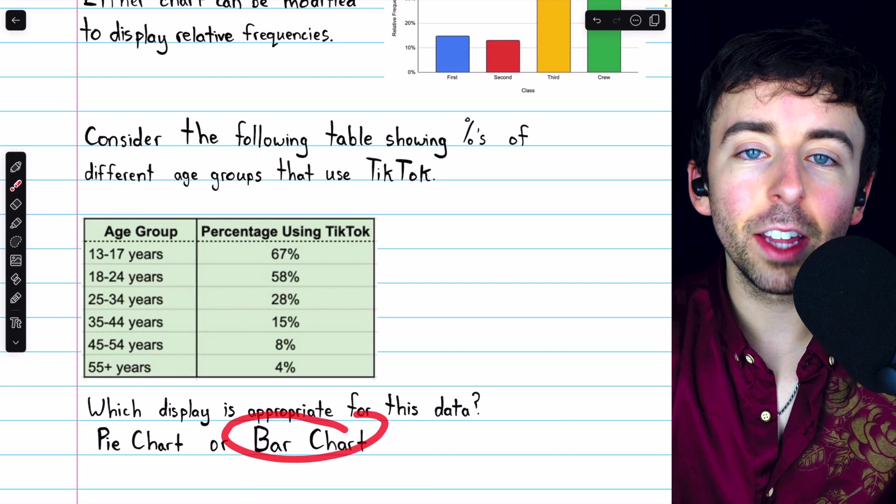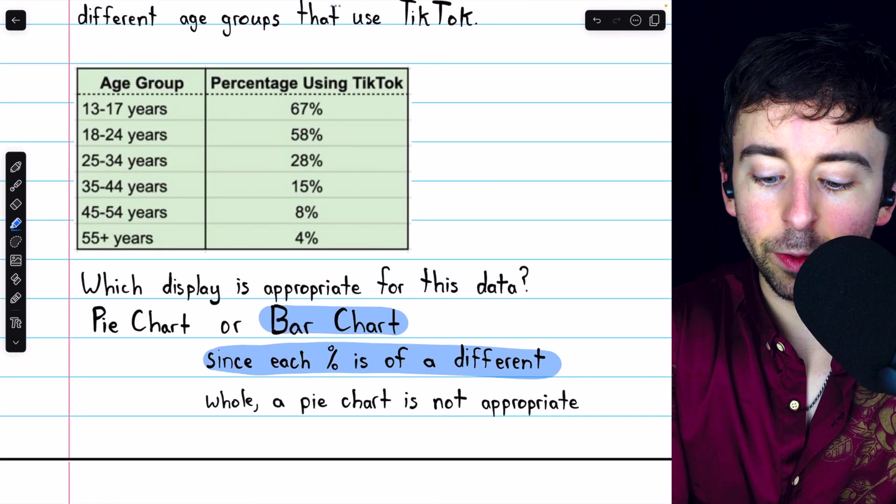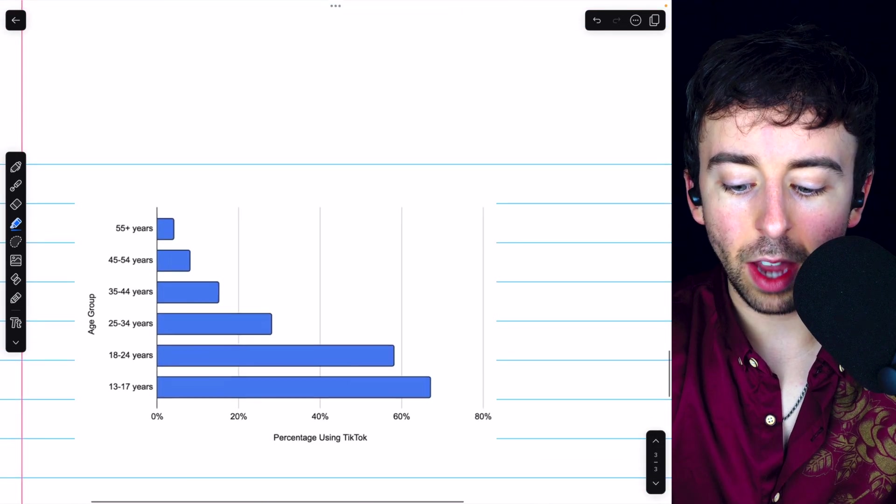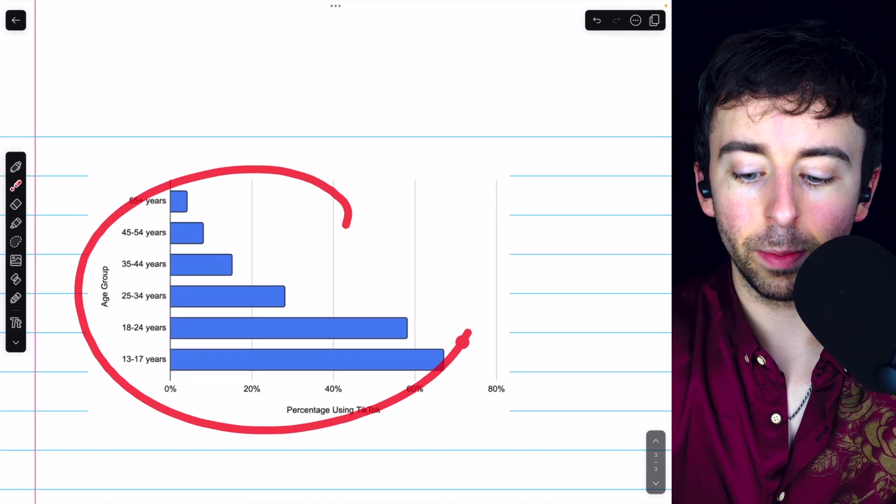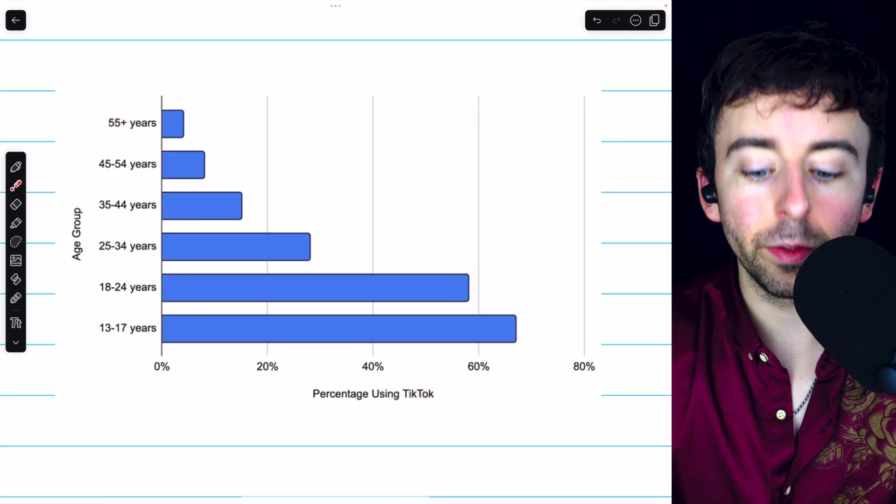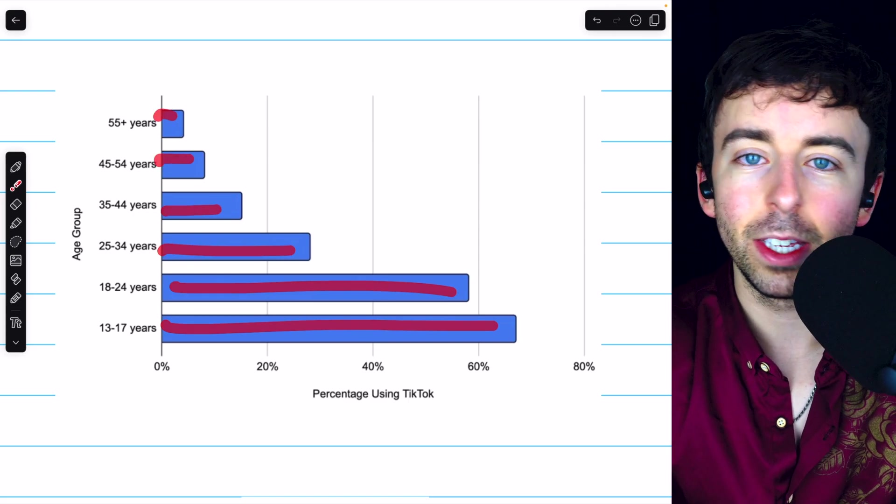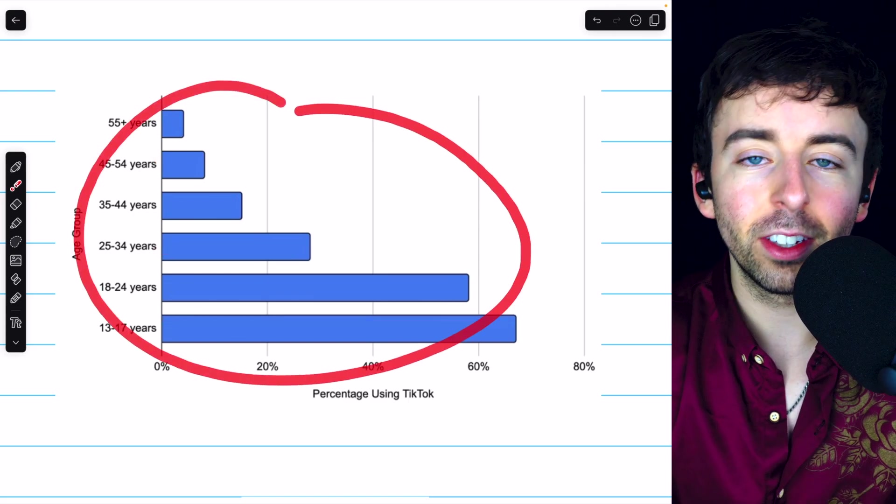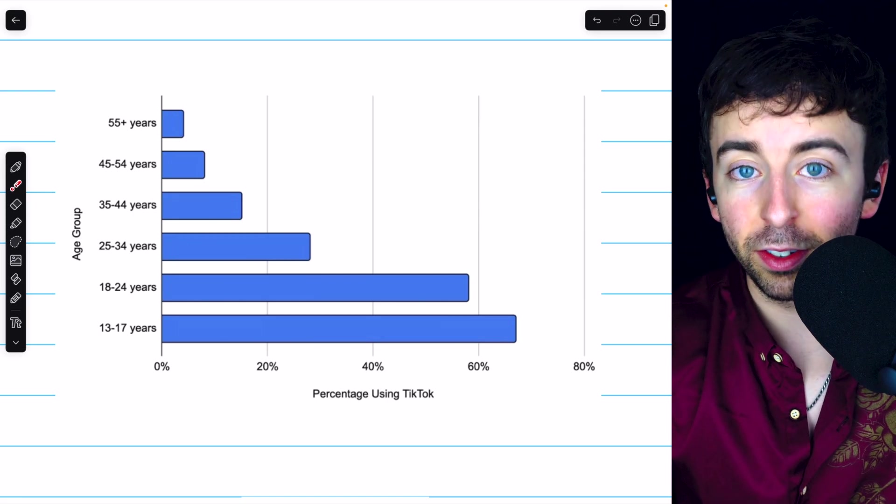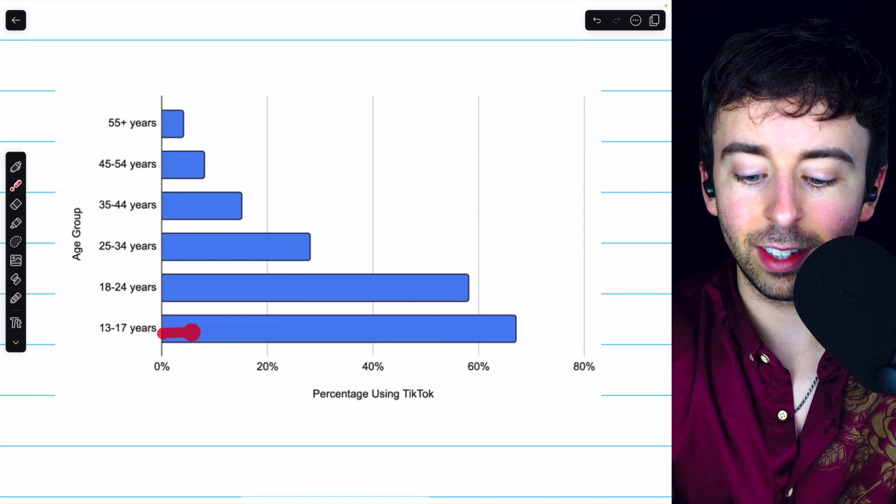So a pie chart would not be appropriate here. A bar chart, on the other hand, works fine. Since each percent is of a different whole, a pie chart is not going to be appropriate. We would want to use a bar chart, and here's an example of that. This also is an example of a bar chart where instead of going vertically, the bars go horizontally. And either one can be used. This bar chart does not suggest that all the percentages together make up a single whole, which is good because they don't.